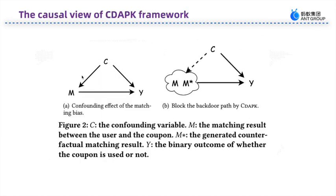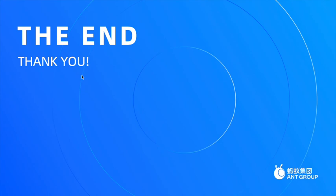This is a causal view of the CDAPK framework. The red figure demonstrates CDAPK effectively alleviating the matching bias by cutting off the biased paths. Specifically, the joint unbiased distribution consists of augmented counterfactual data represented by node M-star and the observational training data represented by node M, which is not affected by the confounding effect. Node C does not affect the combination of node M-star and M. Consequently, a model trained on such data can accurately capture the causal relations between the matching and the conversion without being affected by matching bias.